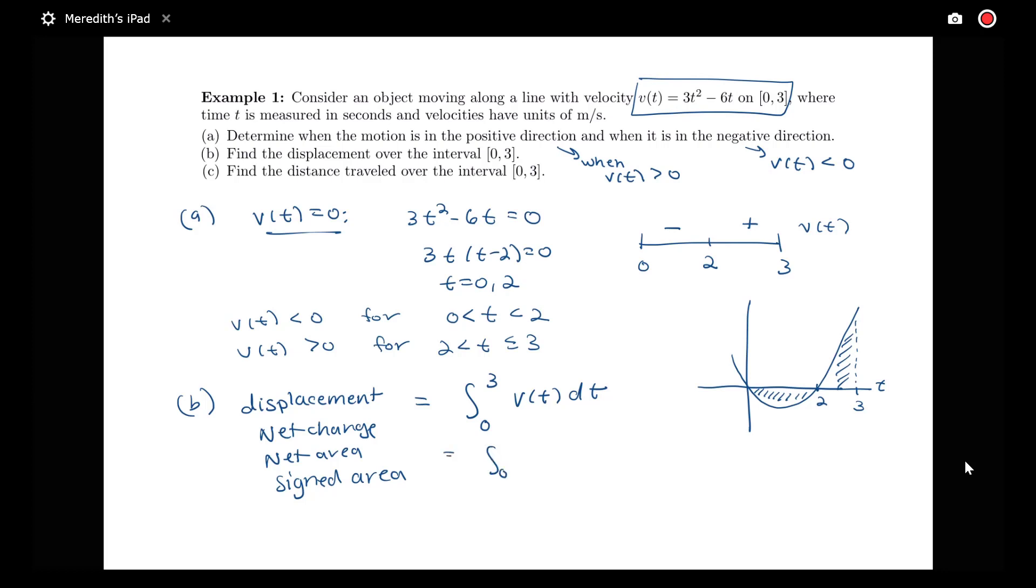I'm going to integrate from 0 to 3 of 3t² - 6t. This will be t³ - 3t², evaluated from 0 to 3. So I have (27 - 27) - (0 - 0) = 0. I end up with a total displacement of 0 meters.